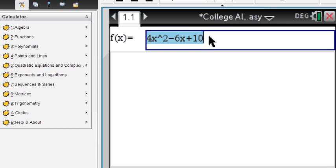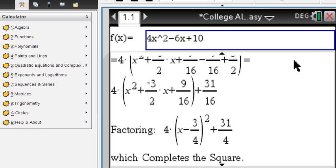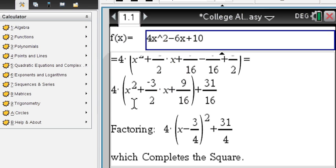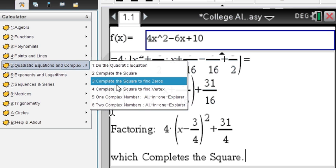Completing the square. Enter a quadratic equation. Scroll up. And you can see all the steps that are involved in completing the square until you arrive at the vertex form. You can also do the complete the square procedure in order to find zeros.